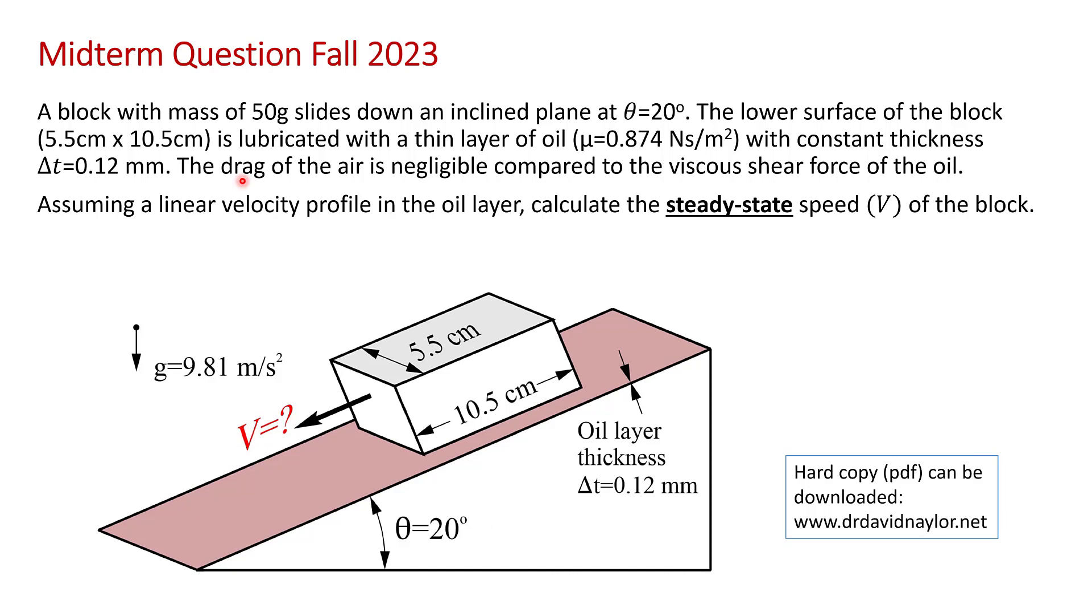You are told in the problem that the drag of the air on the block is negligible compared to the viscous shear force of the oil. Assuming a linear velocity profile in the oil layer, you are asked to calculate the steady state speed V of the block.